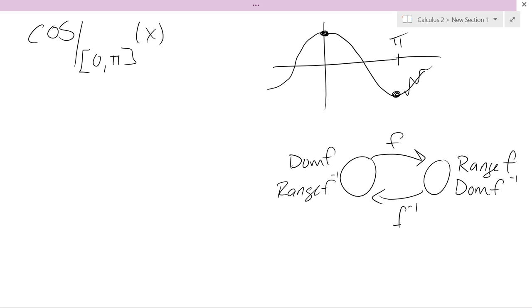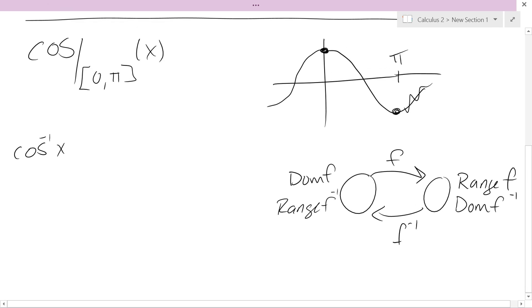We can do the same flipping this around with the inverse notation. Cos inverse x equals y is the same as x equals cos y. But when you write x equals cos y, you have to be mindful that we're restricting input between zero and π. So you have to make sure that x is between zero and π.